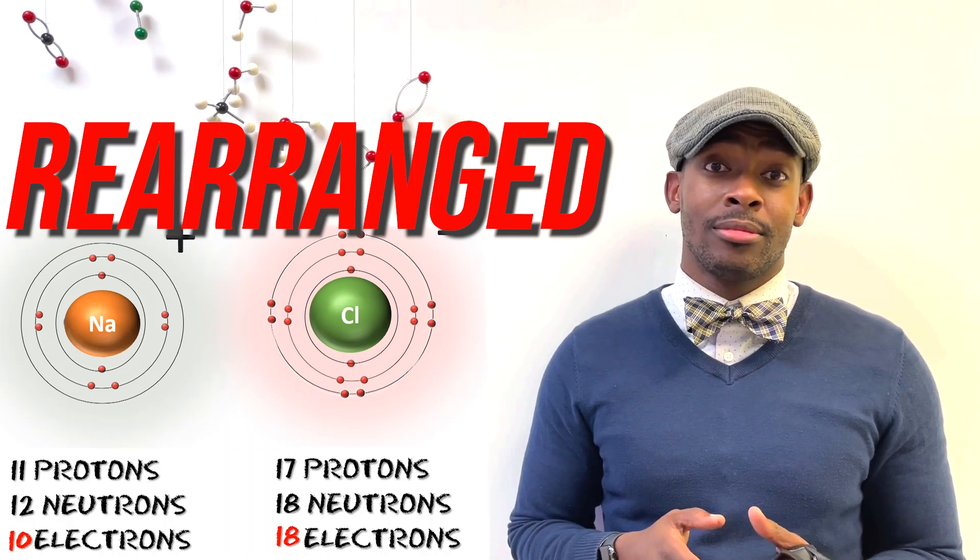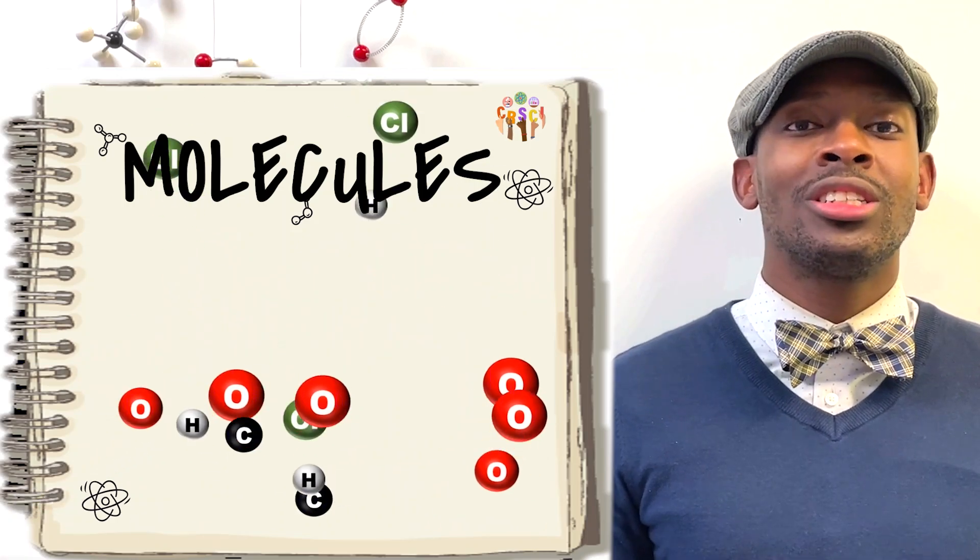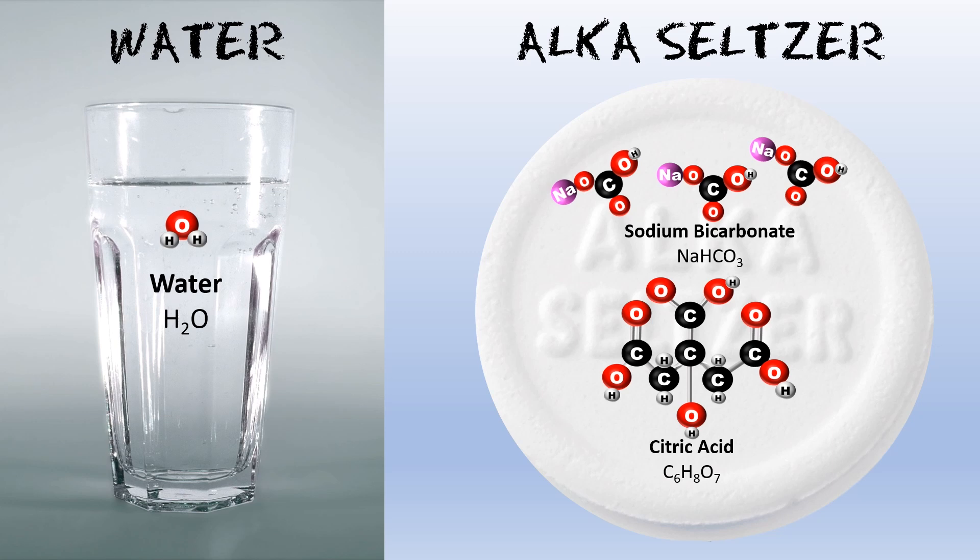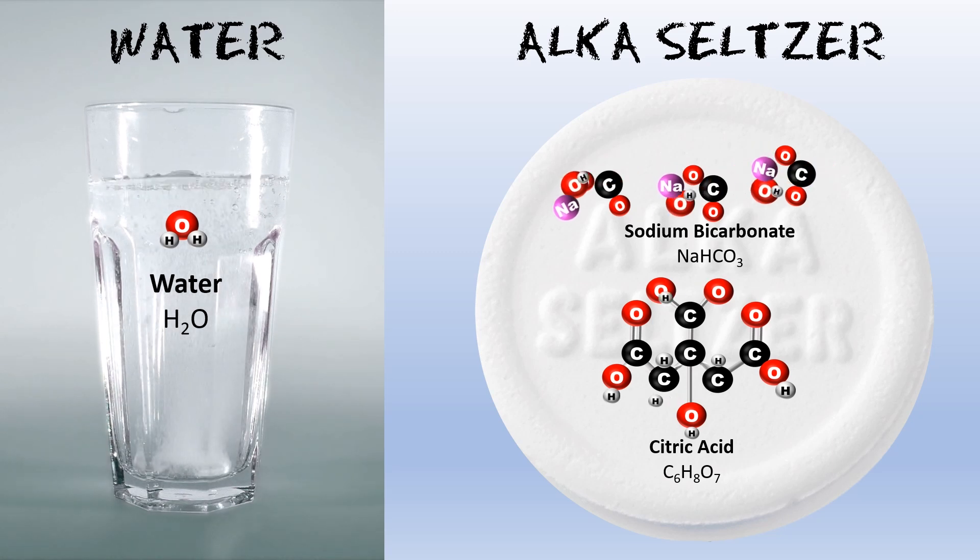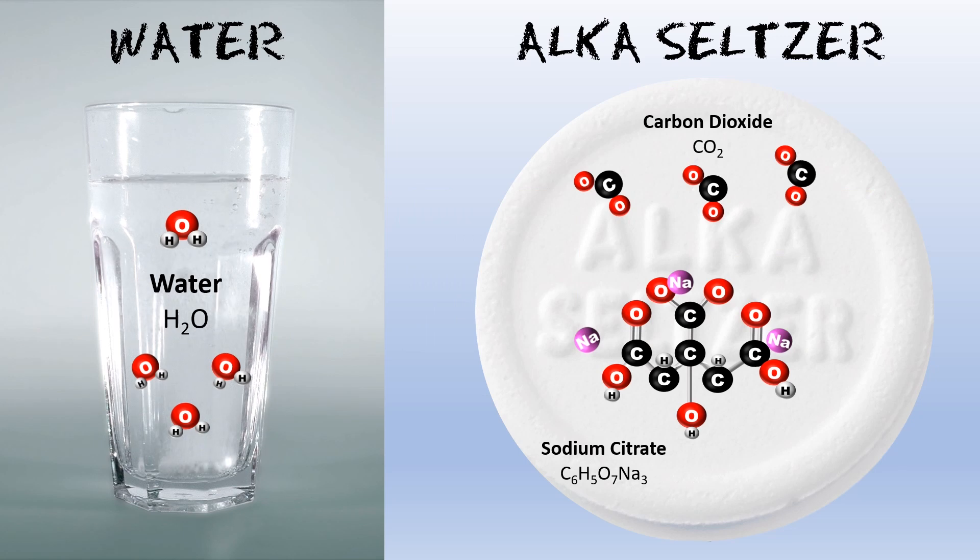The same happens with molecules. A molecule consists of two or more atoms bonded together. If you take Alka-Seltzer and dissolve it in water, the molecules making up Alka-Seltzer will become rearranged. This is called a chemical reaction.